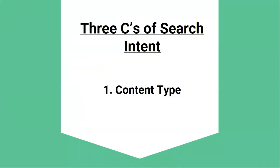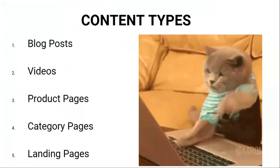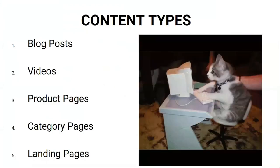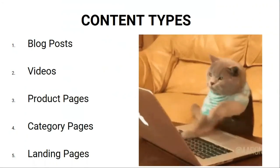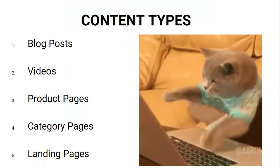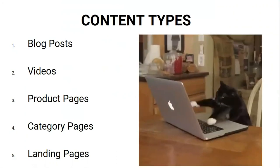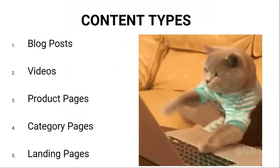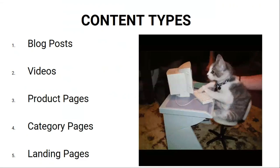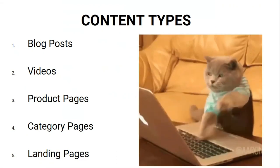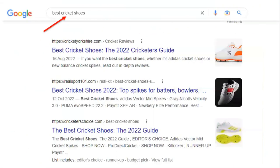The first C is content type. Content type can usually be recognized into blog posts, video posts, product pages, landing pages, and category pages. For example, the dominant type of pages for 'best cricket shoes' are blog posts.